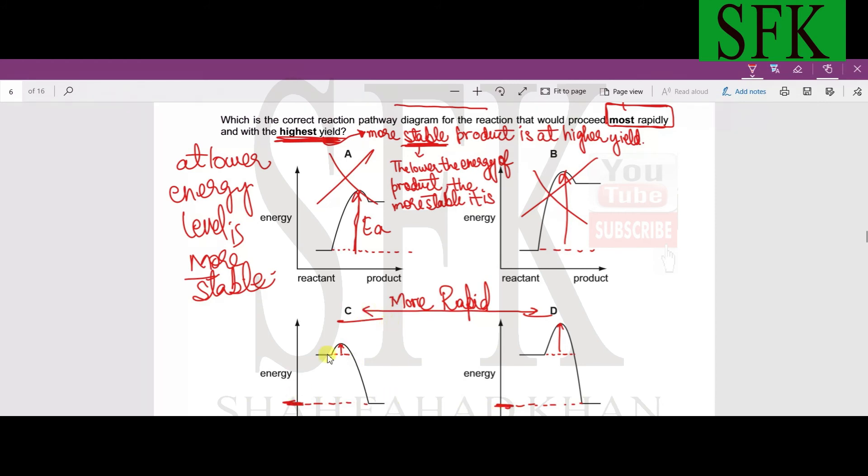But which one of them will be more rapid? The activation energy arrow in option C is even shorter, even smaller as compared to the activation energy arrow in option D, so therefore C is the correct option because activation energy is smaller as compared to the activation energy of D. Therefore this will proceed more rapidly and at the same time will have a very stable product.